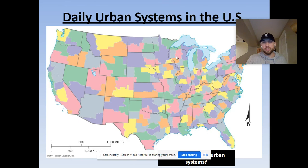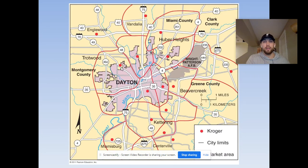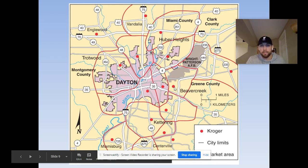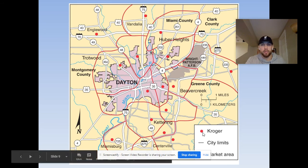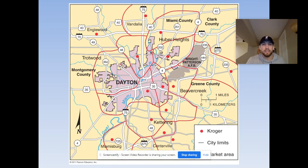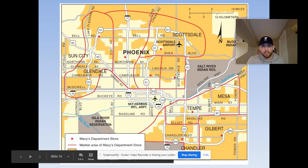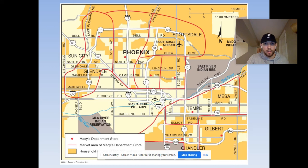Even within an urban area, you see range and threshold of services. This example shows Kroger grocery stores in Dayton, Ohio — these are strategically placed in areas that fit the range and threshold of Kroger based on population, income, and willingness to drive. Here's also an example of Macy's — in some cases the market area is smaller. Macy's is a department store, so you can guess this is a higher income area — the market areas shown are probably high-income areas.